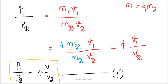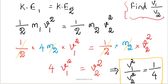To solve the problem, we need the value of V1 by V2. We use the hint that KE1 equals KE2 — that is, same kinetic energy. Using the kinetic energy formula: one-half M1 V1 squared equals one-half M2 V2 squared.